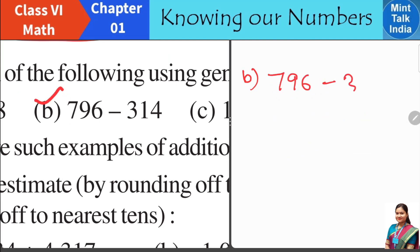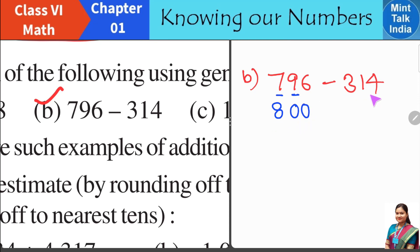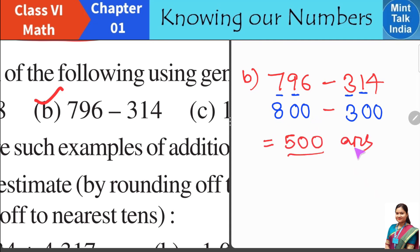Question B: 796 minus 314. Observe the digits in the tens and hundreds place. The tens digit of 796 is more than 5, so the hundreds digit will be 1 greater: 7 plus 1 is 8, giving 800 after rounding off. For 314, the digit at the tens place is less than 5, so no change — we write 300. Mentally subtracting 300 from 800 gives 500, your estimated answer.